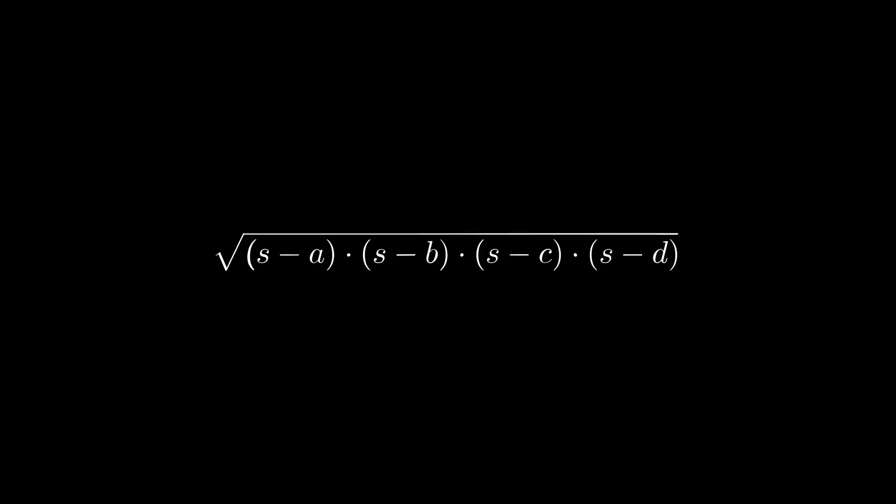This leads us to Brahmagupta's formula, which extends this idea to cyclic quadrilaterals. Brahmagupta's formula states that the area of a cyclic quadrilateral is the square root of the product of the semi-perimeter minus each of the side lengths. Wow, that's so symmetric. Wait a minute, could we use that symmetry to prove this formula?